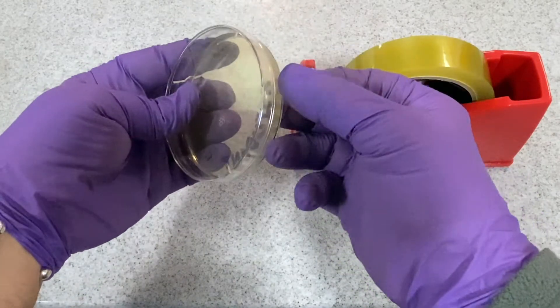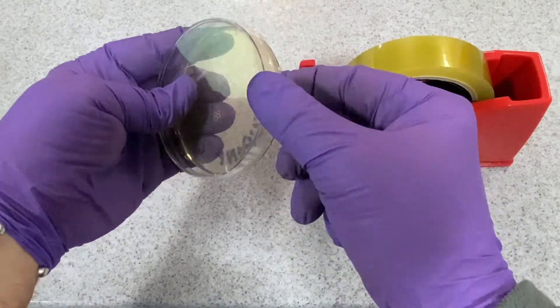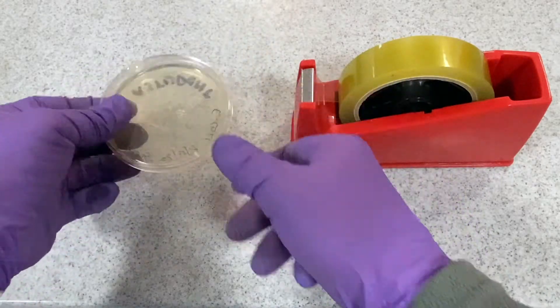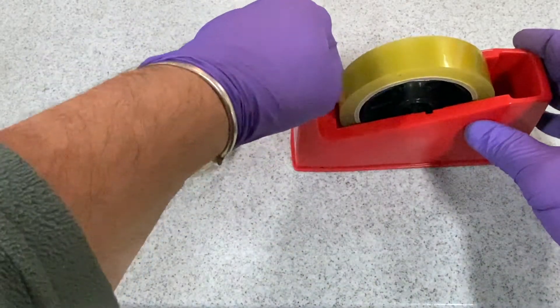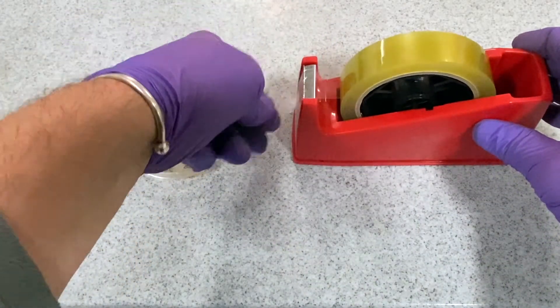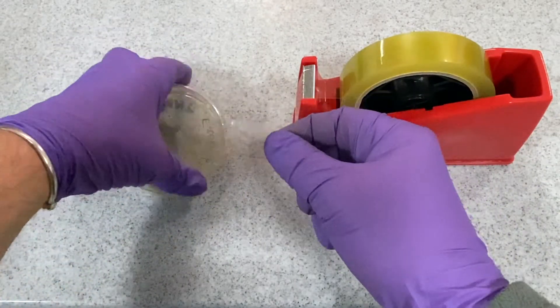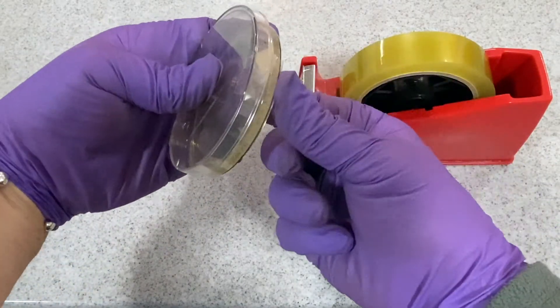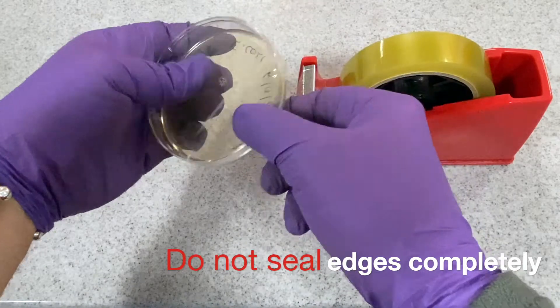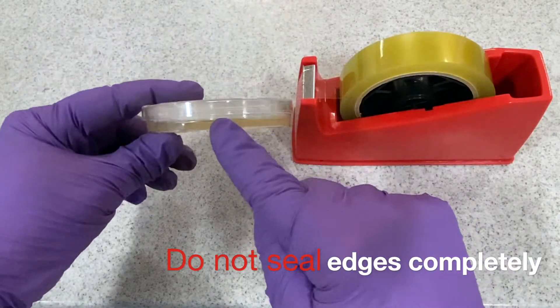The petri dish lid is secured above the sample by means of sellotape. Use two or three pieces to secure the lid to the base of the dish. Never seal completely around the edge of the dish as this will create anaerobic conditions and may allow for the growth of harmful bacteria.